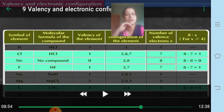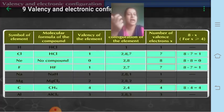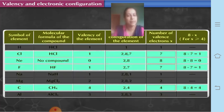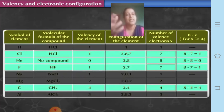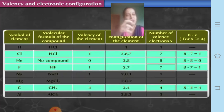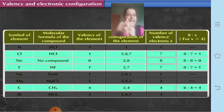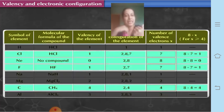In certain other elements, the number of valence electrons is different from the valency. When the number of valence electrons is more than 4, we use 8 minus x. For chlorine: 8 minus 7 equals 1 — it requires 1 electron to complete its octet, so its valency is 1. For fluorine: 8 minus 7 equals 1 — it requires 1 electron. For carbon: 8 minus 4 equals 4.